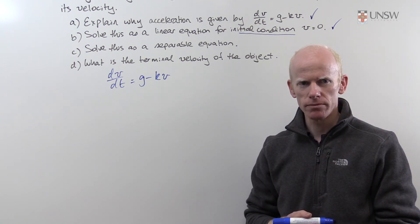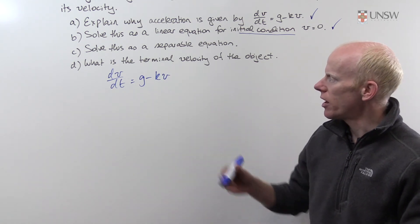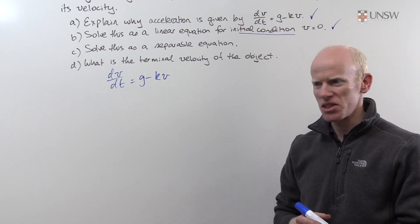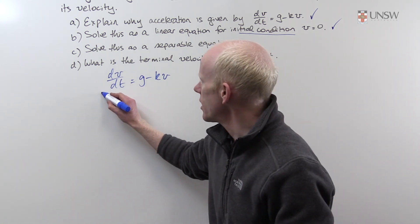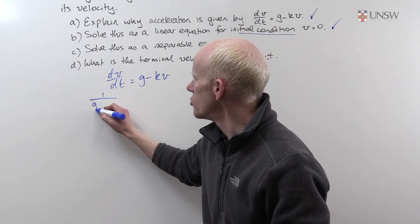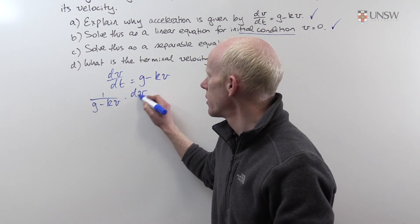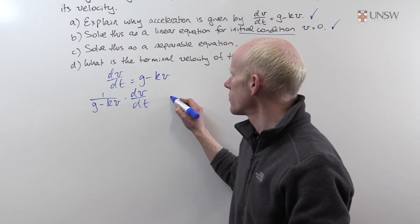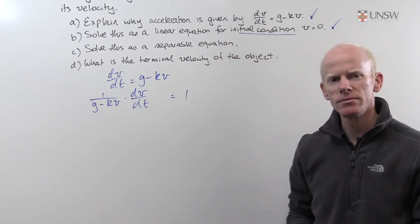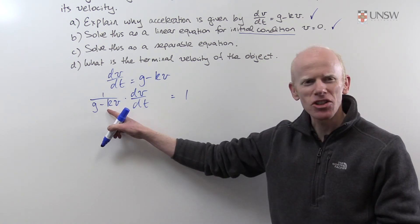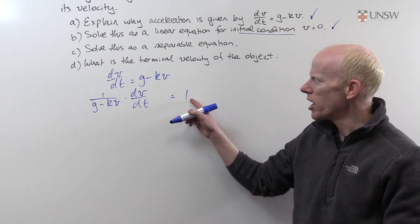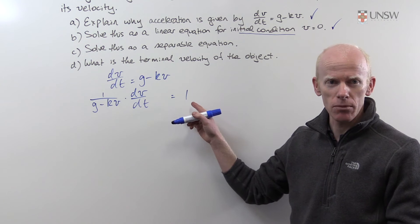How did you go? Well, the trick here is to divide throughout by g minus kv. So on the left-hand side, I'll have 1 over (g minus kv) times dv/dt equals 1. Here is my function with respect to v, and on the right, I have a function with respect to t, namely 1.